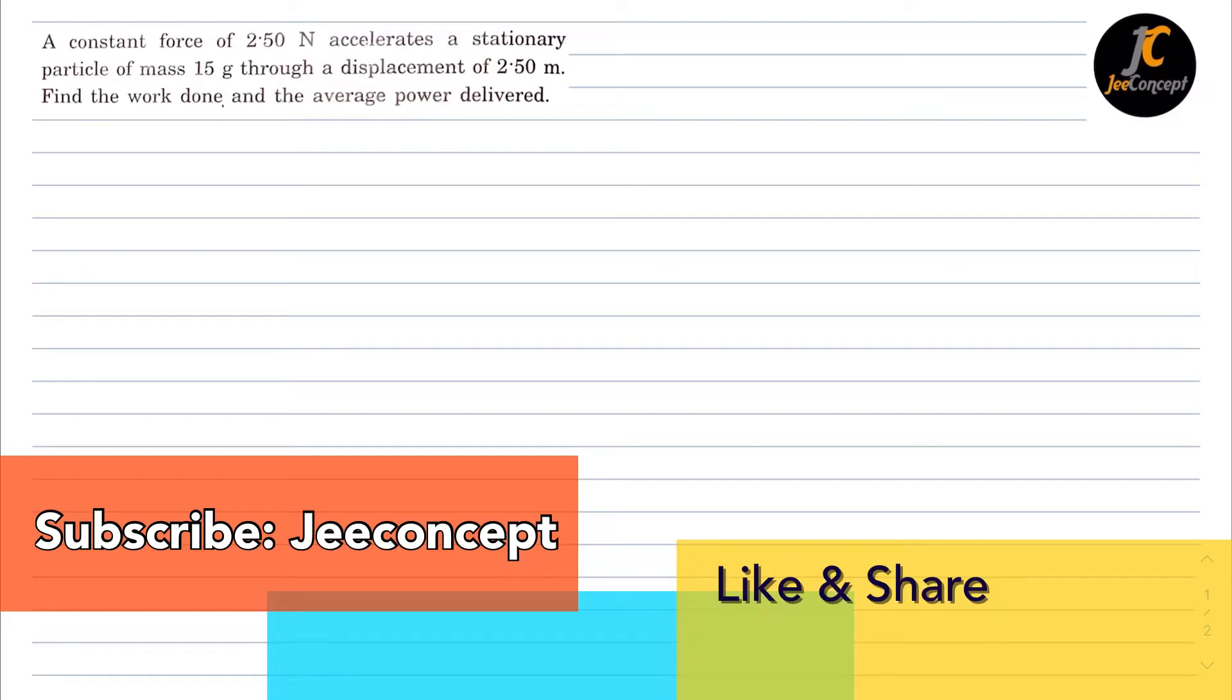Hello everyone, in this problem a constant force of 2.5 Newton accelerates a stationary particle of mass 15 grams through a displacement of 2.5 meters. Find the work done and the average power delivered.